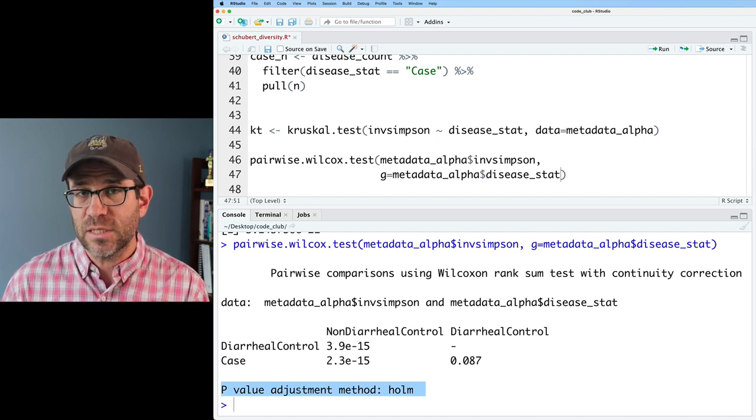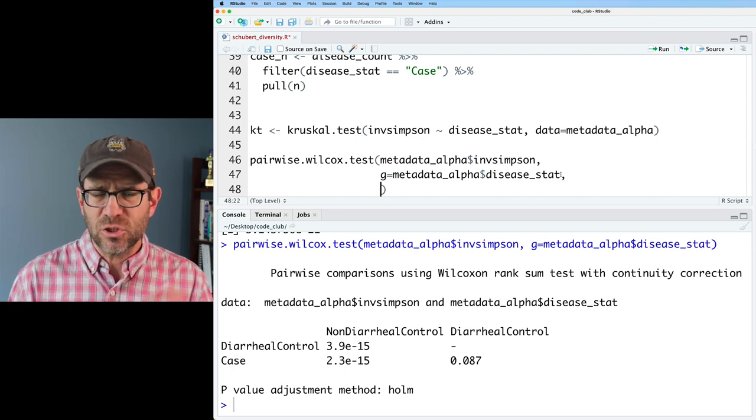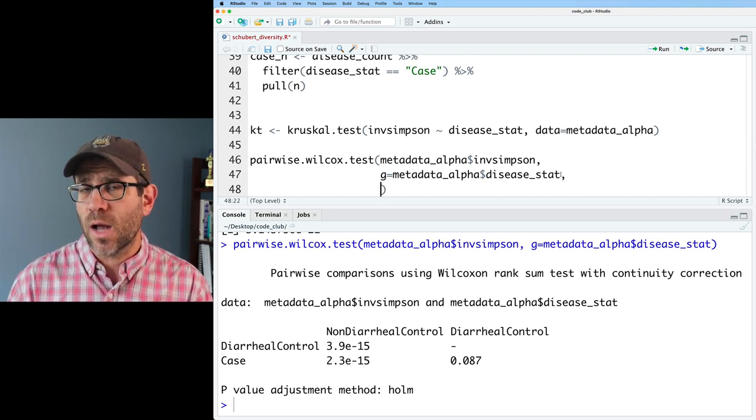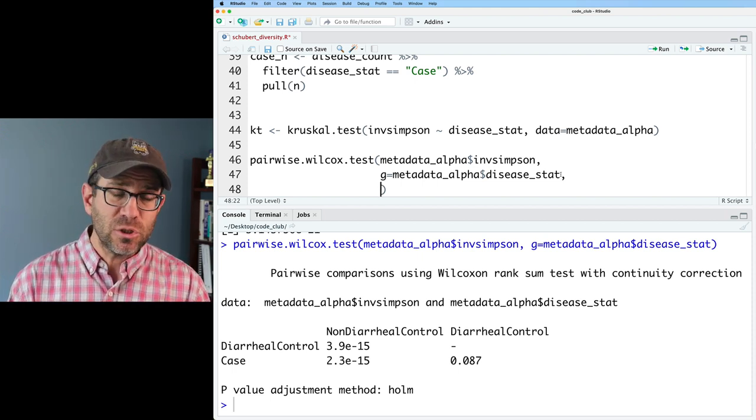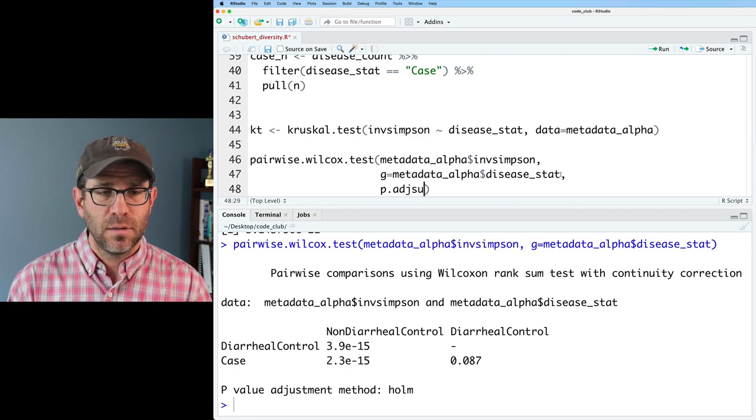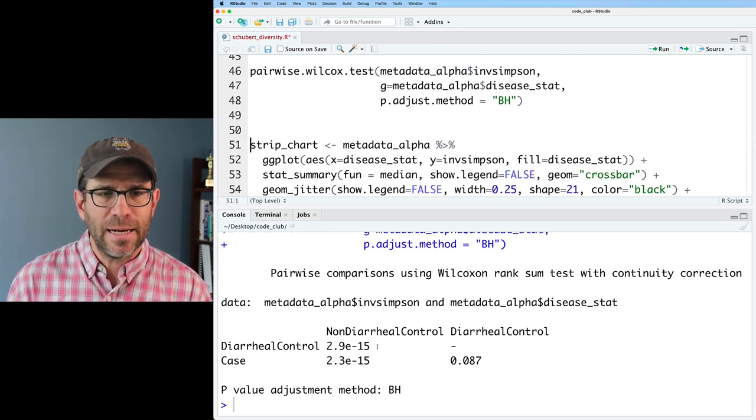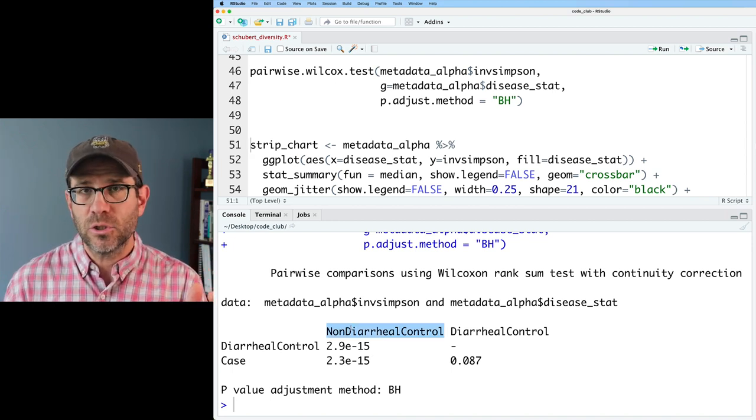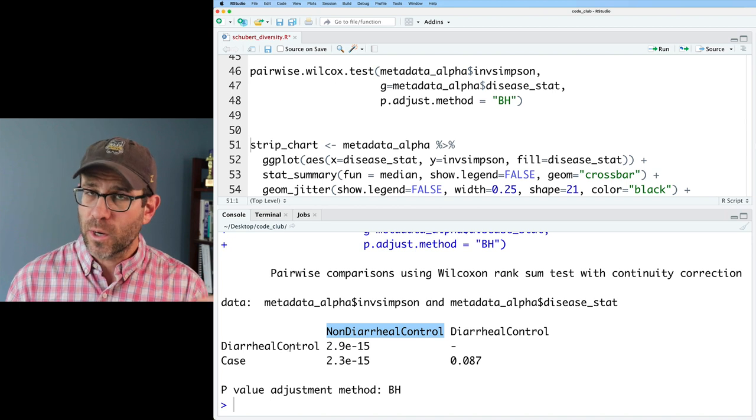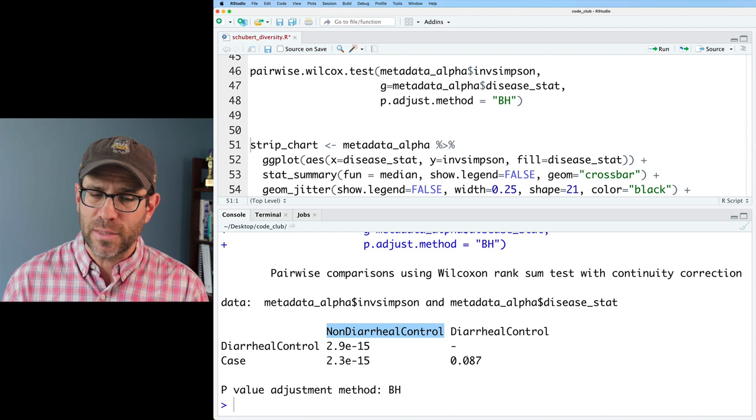At the bottom here, it tells us that it is adjusting the p-values using the method Holm. I don't use the Holm method, I'm not super familiar with it. The method that I see more commonly used in literature, and that what I use myself, is Benjamini-Hochberg. I can use Benjamini-Hochberg by doing p.adjust.method equals, and then in quotes, BH. That tells me that's there. And so we find a very similar story, that the non-diarrheal control is significantly different from people that have diarrhea regardless of their C. difficile status, but there's no difference between people that have diarrhea with and without C. difficile.